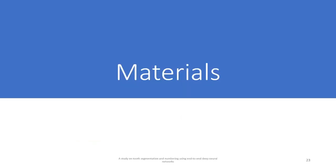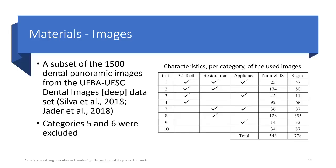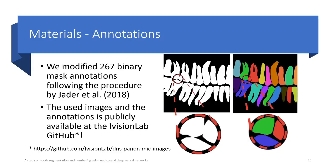Now let's talk about the materials, which is the used dataset. The used images are a subset of the UFBA-UESC Dental Image dataset that our lab made public. These images have a high variability and were grouped into 10 different categories. We selected 543 images for instance segmentation and 778 images for semantic segmentation. We excluded images from categories 5 and 6 because they mainly included mouths with deciduous teeth and implants.